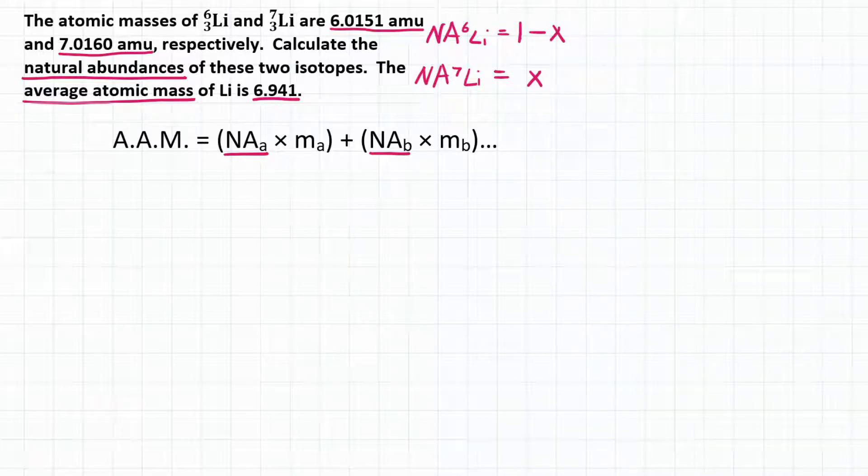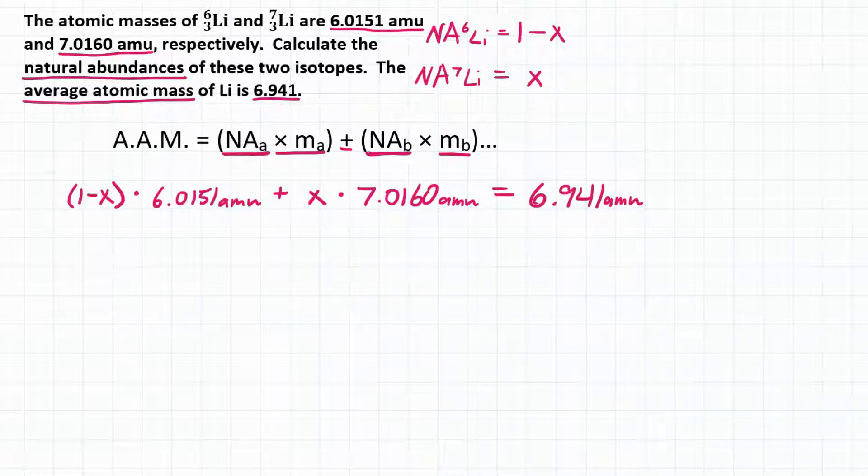So let's start plugging into our equation everything we know. Let's start with the natural abundance of lithium-6, and that we're going to say is 1 minus X, and that is going to be multiplied by the atomic mass of lithium-6, which, looking in the problem, is 6.0151 AMUs. Okay, that is going to be added to the natural abundance of our second isotope, which we are denoting as just X, and then multiplied by the atomic mass of lithium-7, which is 7.0160 AMUs. And all of this is going to be equal to our average atomic mass, which is 6.941 AMUs.